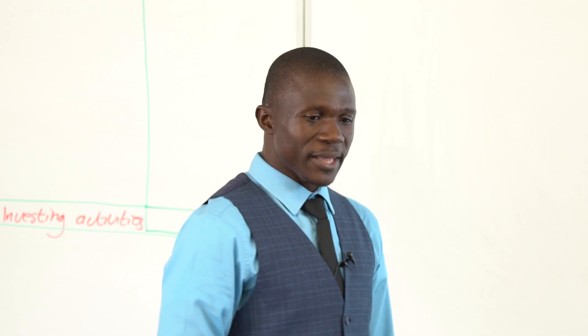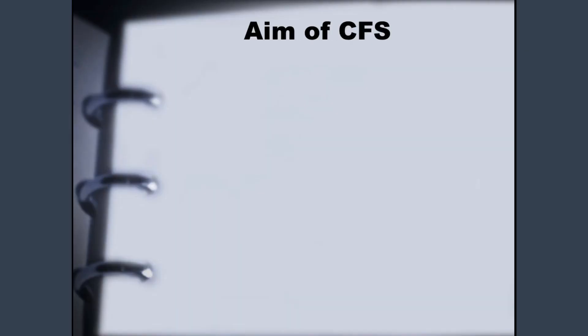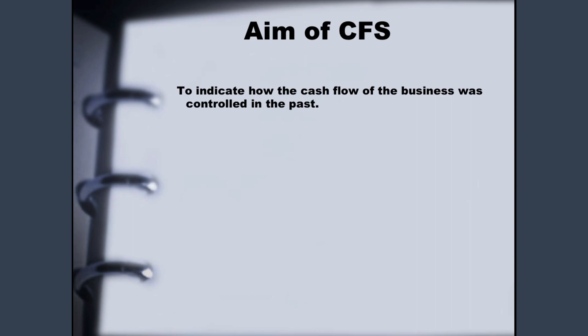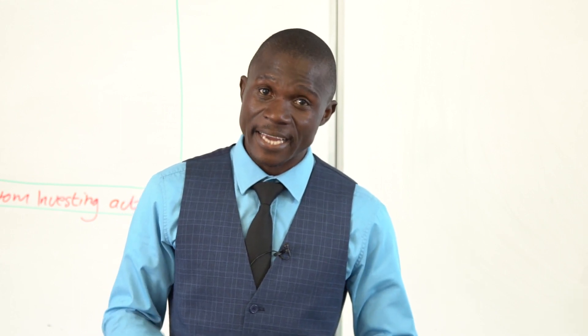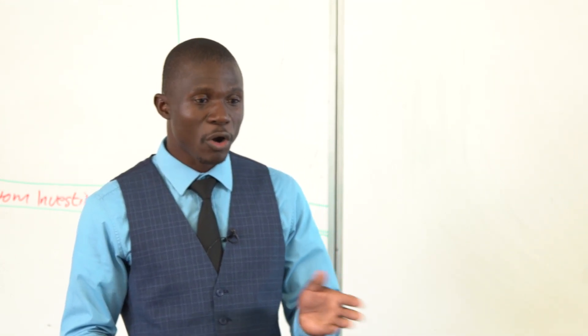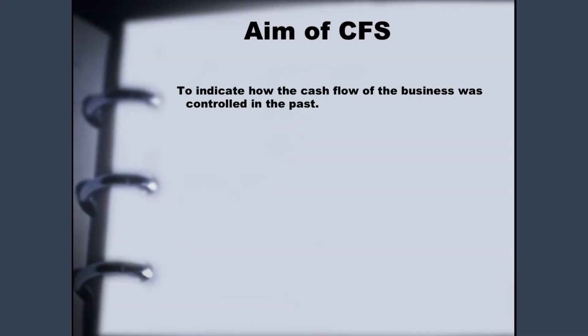Now let's look at the aims of the cash flow statement. The first aim is to indicate how the cash flow of the business was controlled in the past. This means you need to have two consecutive years of financial statements for your entity — for example, 2017 against 2019 — to compare and check how the business was controlling their money.